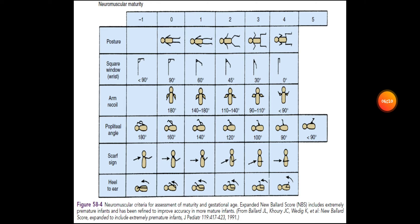For arm recoil: if the arm can recoil to 180 degrees, that carries zero points. One hundred forty to 180 degrees carries one point. One hundred ten to 140 degrees carries two points. Ninety to 110 degrees carries three points. Less than 90 degrees carries four points.